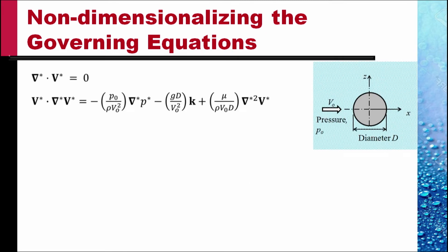These are the governing equations for incompressible steady flow. In normalized form, the continuity equation becomes del* · V* = 0. For steady flow, the Navier-Stokes equation in its normalized form reduces to: V* · del* V* = − (P naught / ρ V naught²) del* p* − (g d / V naught²) k̂ + (μ / ρ V naught d) del*² V*, where k̂ is the unit vector in the vertical direction.